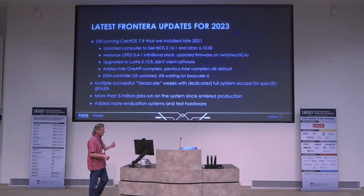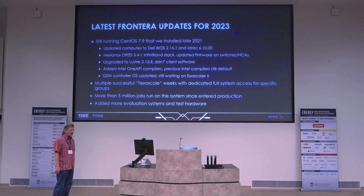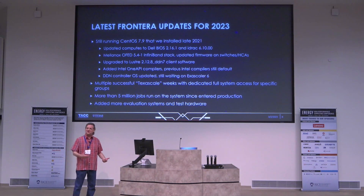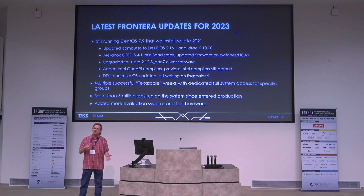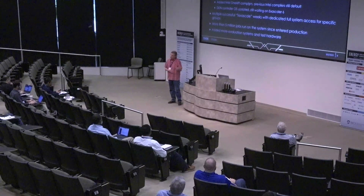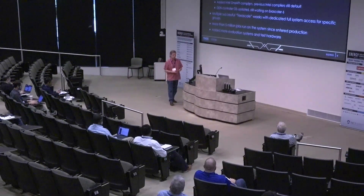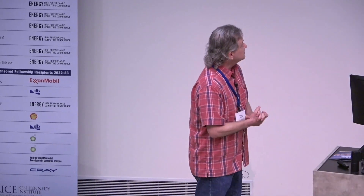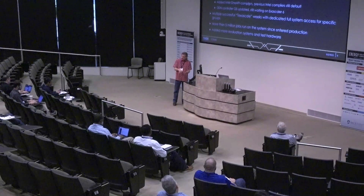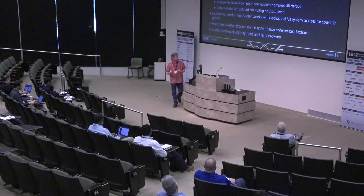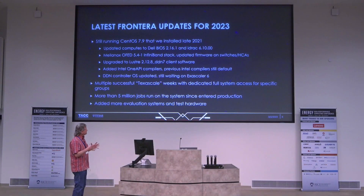We've deployed oneAPI on the system. Unfortunately, we found that some things run slower with the new Fortran compilers, so we've been working closely with the Intel team to make sure all the improvements from the old versions are actually getting implemented in the new versions. We certainly don't want to lose performance just by upgrading compiler versions. This is still a work in progress. The nice thing is they still have the legacy compilers built with oneAPI, so you can still go back and use the legacy compilers if needed.